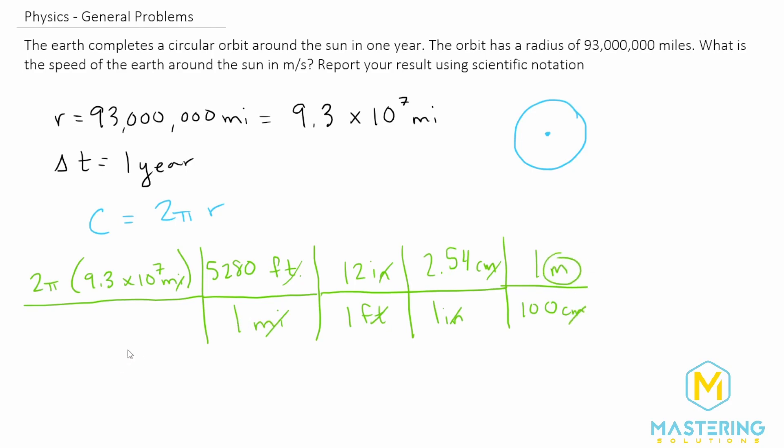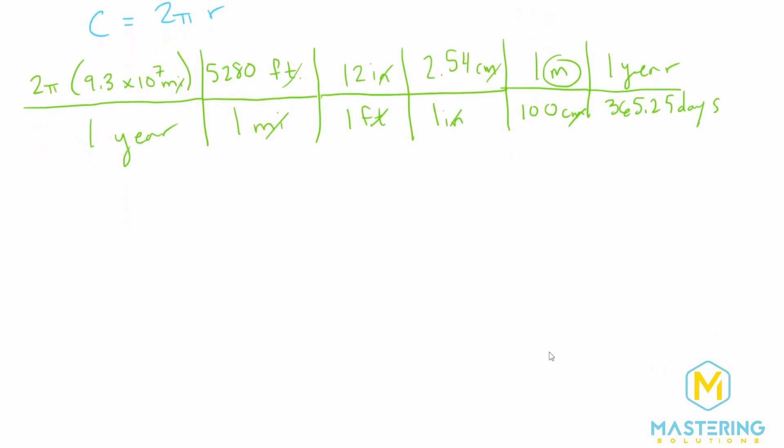So now we're in meters. We just need to figure out how many seconds there are because this path takes one year. In one year, we have 365.25 days. Let's give us some more room. Imagine this is all one long line, but I'm just going to circle around here.